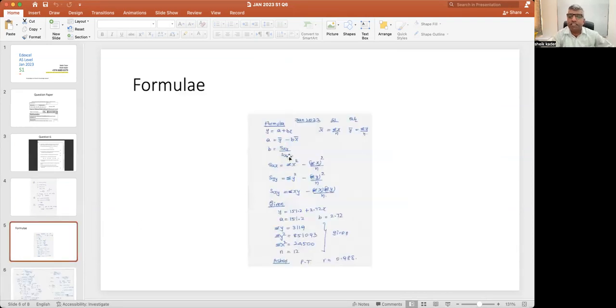We will see the data. Before that, list of all the formulas of regression line: y equals a plus bx, a equals y-bar minus bx-bar, y-bar equals sigma y over n, x-bar equals sigma x over n, b equals sxy over sxx, sxx equals sigma x squared minus square of sigma x over n, syy equals sigma y squared minus square of sigma y over n, sxy equals sigma xy minus sigma x times sigma y over n.